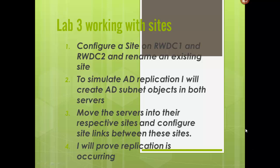Hello, my name is Scott Ingram and today we're going to be working with sites in Active Directory. This is lab 3 of 2050. The first thing we're going to do is configure a site on RWDC1 and RWDC2 and rename an existing site. Second, we're going to simulate Active Directory replication and create Active Directory subnet objects in both servers to simulate that. We're going to move the servers into their respective sites and configure site links between these sites. I will also prove that replication is occurring at the end of this demonstration. So let's get started.